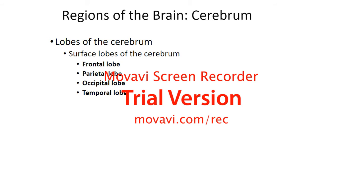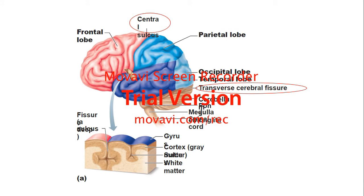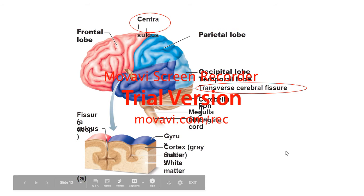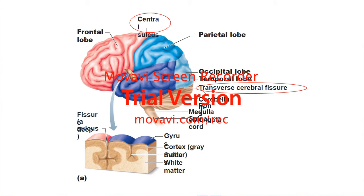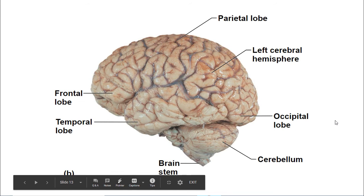The lobes of the cerebrum are the frontal lobe, parietal lobe, occipital lobe, and temporal lobe. We're going to go into more detail about each lobe and their different functions. What they have circled in this diagram is the central sulcus, which separates the frontal lobe from the parietal lobe. They also show the transverse cerebral fissure, which separates the cerebrum from the cerebellum.